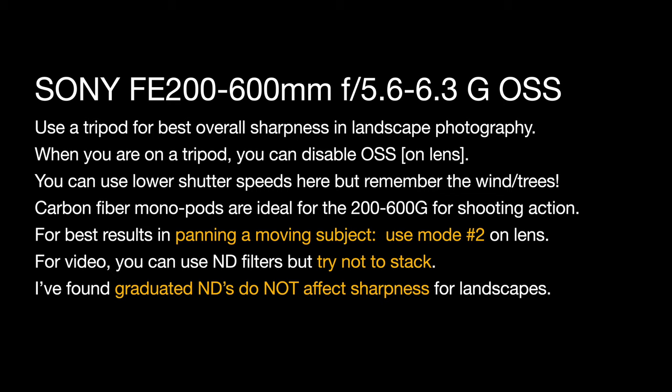Using a tripod is the best way to get overall sharpness in landscape photography. When you're on a tripod, you can disable OSS on the lens — it's just a switch, you can just turn it off. You can also use lower shutter speeds here, but remember the wind in the trees. If you've got a windy day shooting landscapes, you can slow your shutter speed down and drop your ISO, but it might cost you blurry pictures of the trees and grass blowing.